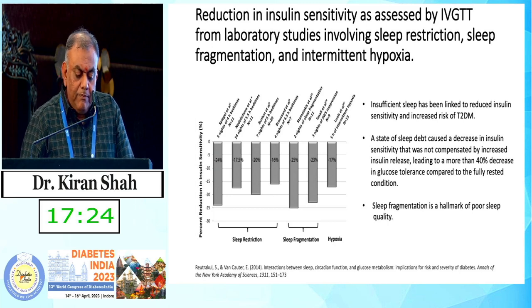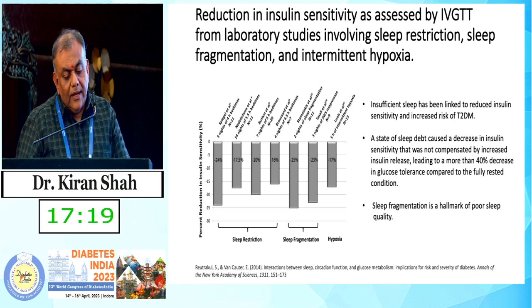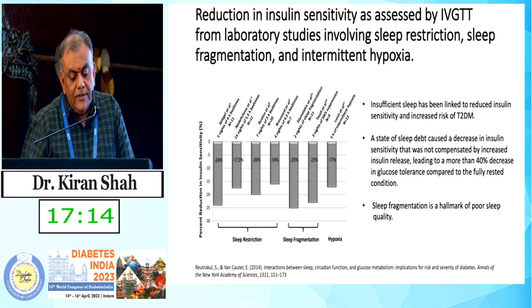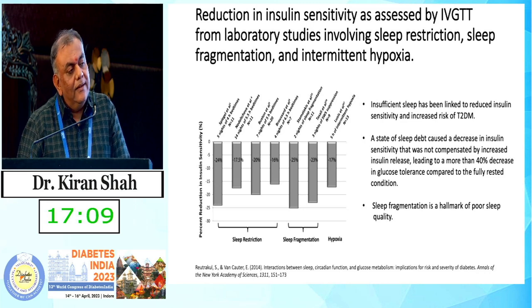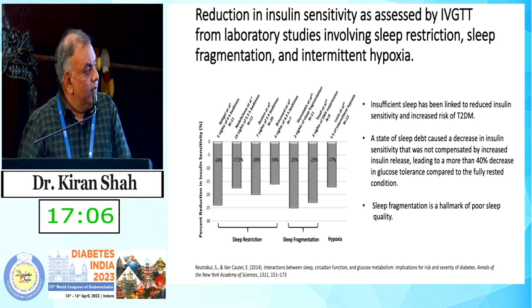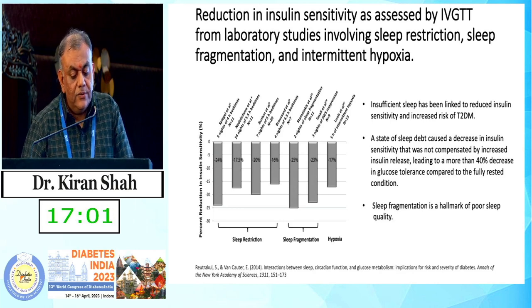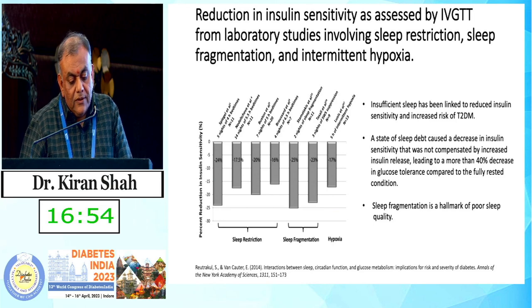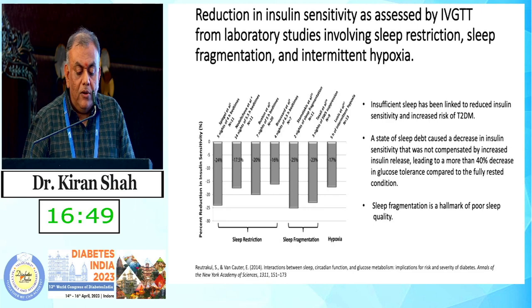There are numerous published papers on sleep restriction, sleep fragmentation, and hypoxia, and they all show a reduction in insulin sensitivity. Insufficient sleep has been linked to reduced insulin sensitivity of around 24%, with an increased risk of type 2 diabetes. A state of sleep debt, caused by decreased insulin sensitivity not compensated by increased insulin release, leads to more than a 40% decrease in glucose tolerance compared to a fully rested condition. Sleep fragmentation, a hallmark of poor sleep quality, reduces insulin sensitivity by almost 25%.